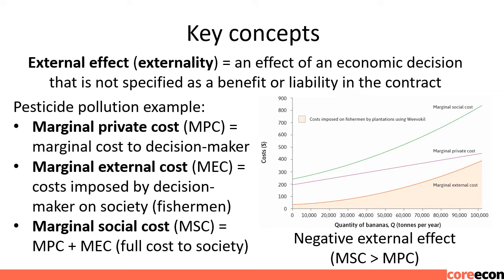The banana producer does not take the full cost of its action into account, so it is useful to think of the difference between the marginal private cost (MPC) and the marginal external cost (MEC). The banana producer looks at its MPC curve when deciding how much to produce. If there were no external costs, the MEC would be zero. But external costs rise with each extra ton of bananas produced because more pesticide is used, killing more fish and causing more losses to fishermen. The marginal external cost curve is upward sloping. The marginal social cost (MSC) curve reflects the sum of MPC plus MEC — the full cost to society.